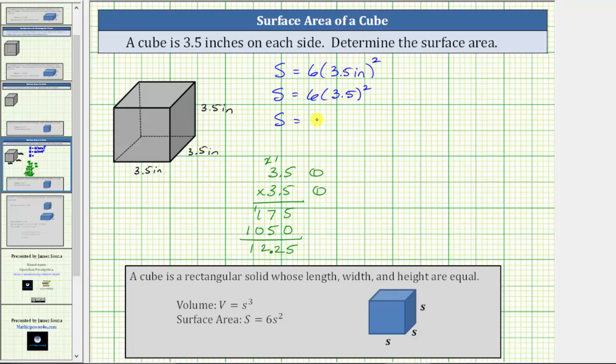The surface area S equals six times 12.25. Now, to determine this product, let's use the commutative property of multiplication and determine 12.25 times six. Notice how the first factor has two decimal places. Six has zero decimal places. Two plus zero is two. The product must contain two decimal places.